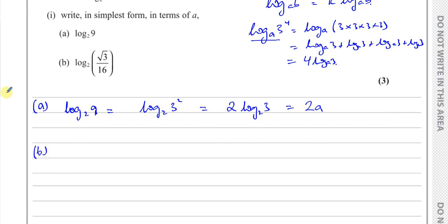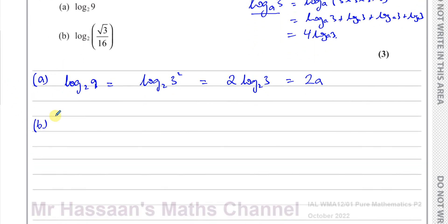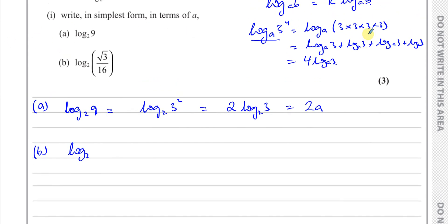For the second part of the question, we can do something very similar. We take log to the base 2 of root 3 over 16 and rewrite it using the laws of logarithms. When you have a quotient inside a logarithm, you can split it into a difference. So I can write this as log to the base 2 of root 3 minus log to the base 2 of 16.